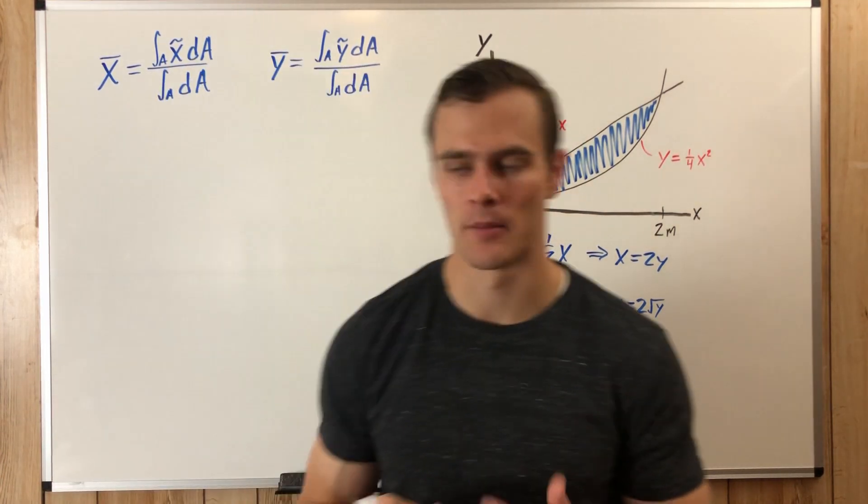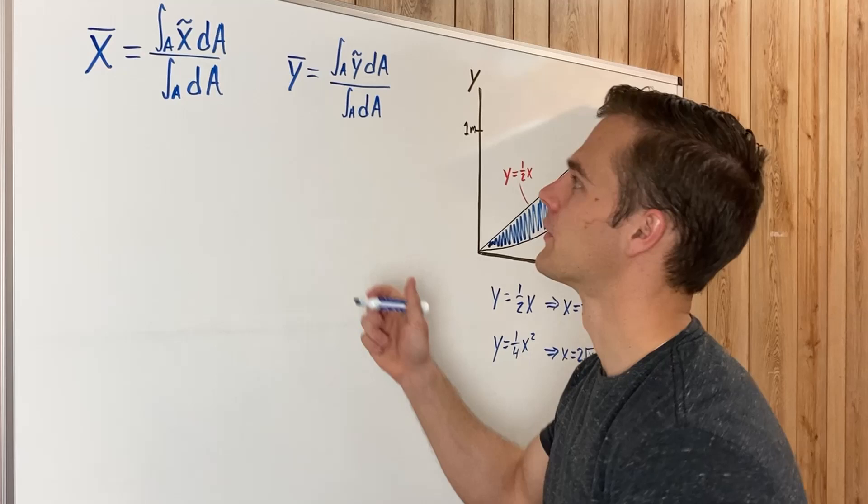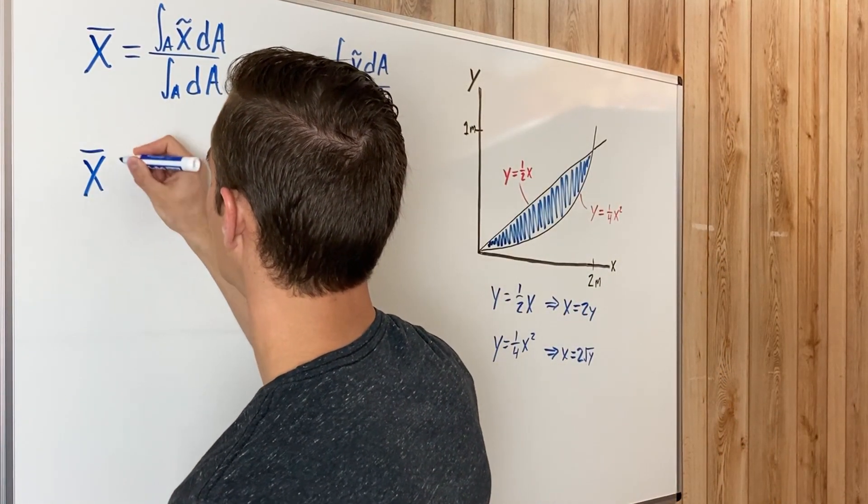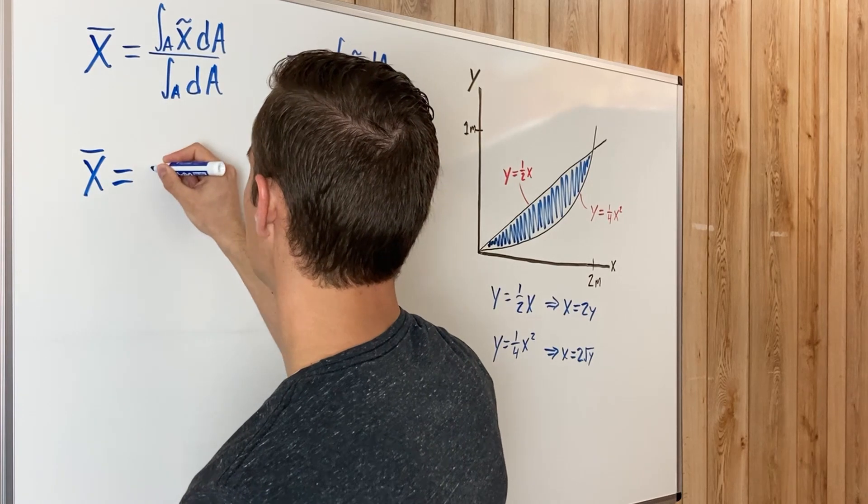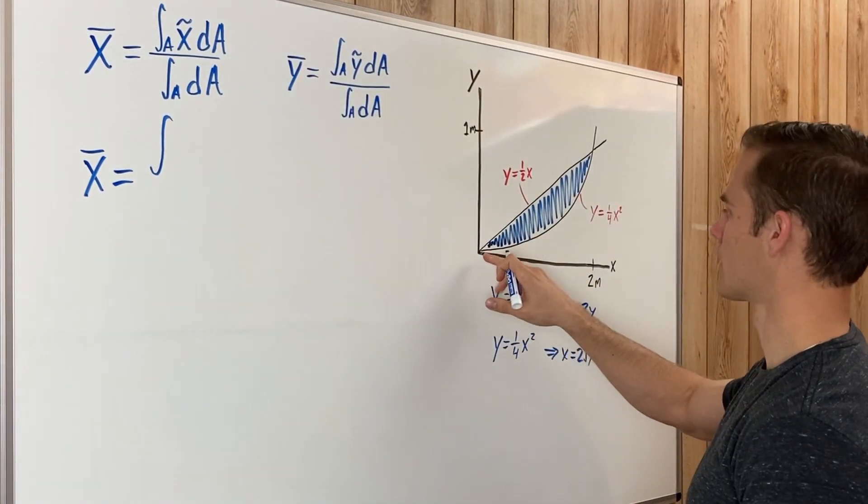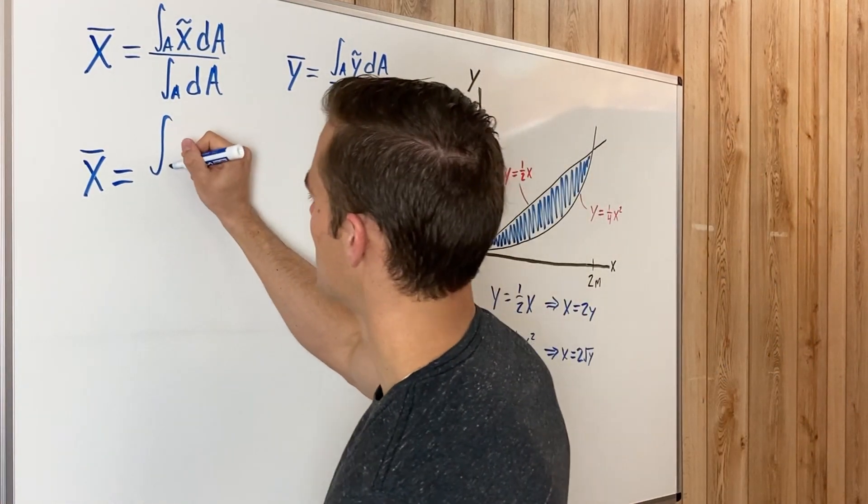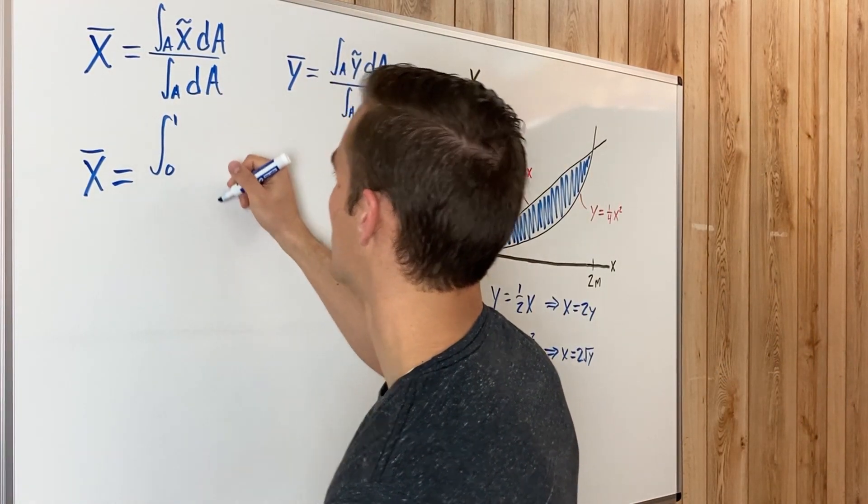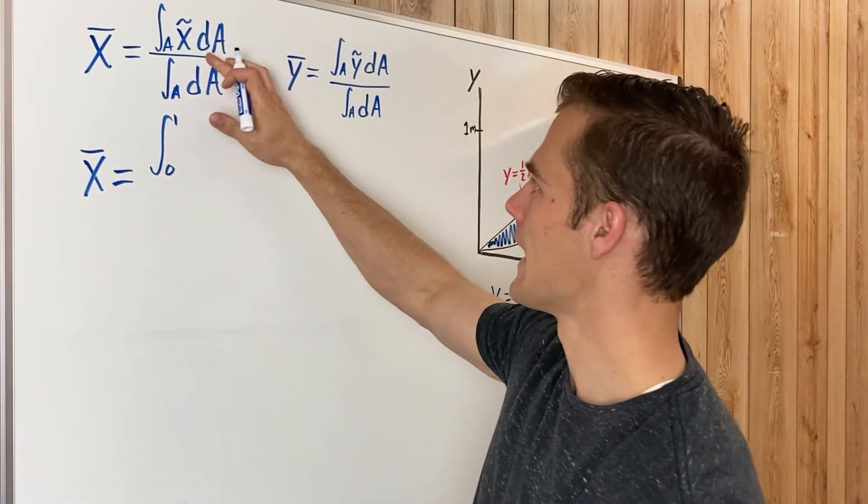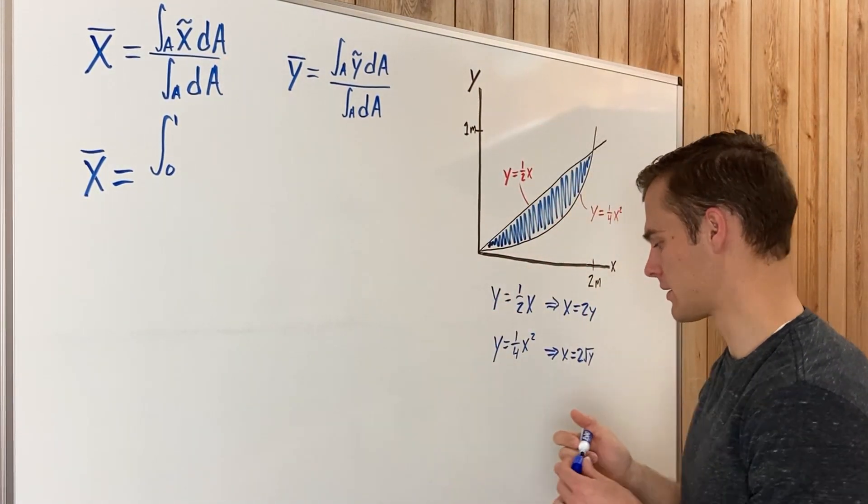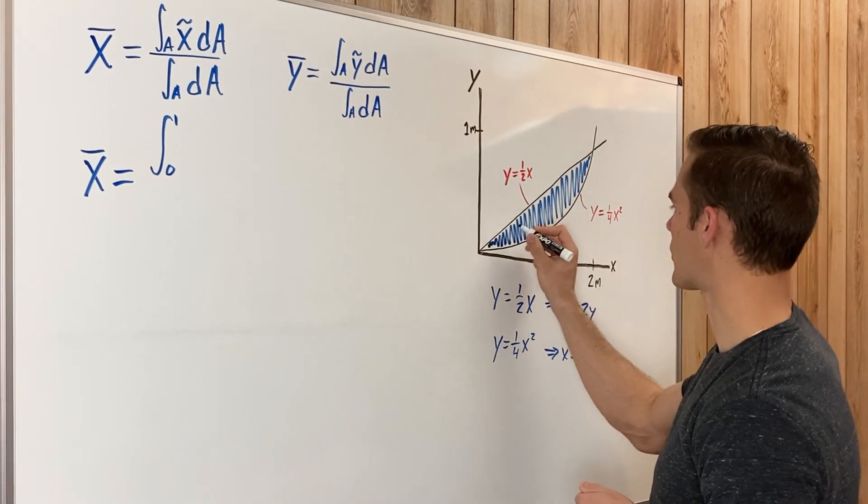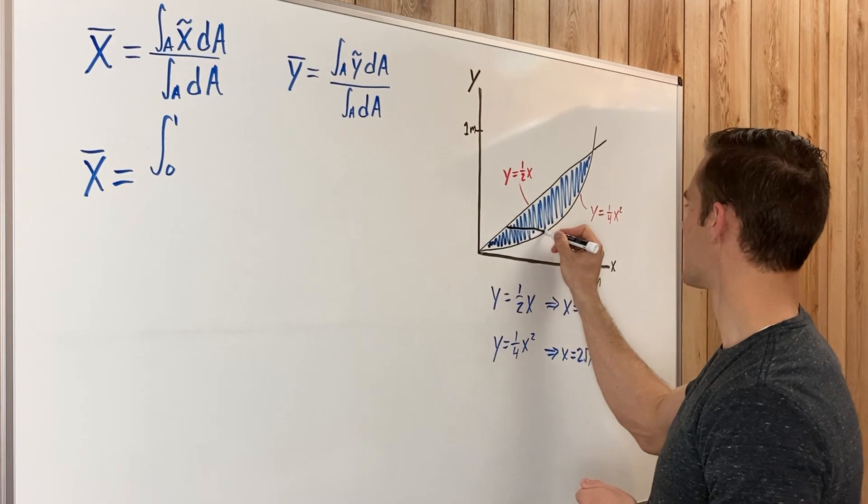Now we need to find X bar and Y bar. To find X bar, X bar is going to equal the integral, and now we're integrating with respect to Y, so it's going to go from 0 to 1. And that's going to be for both X bar and Y bar, that's not going to change since we're integrating with respect to Y.